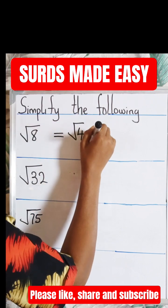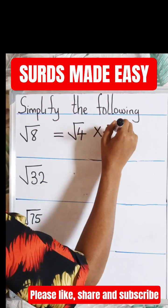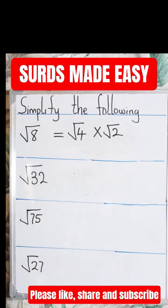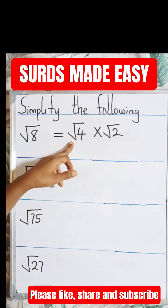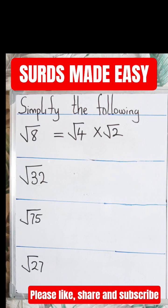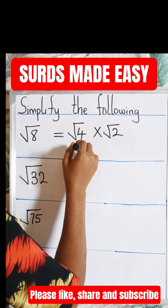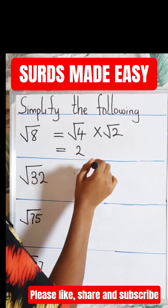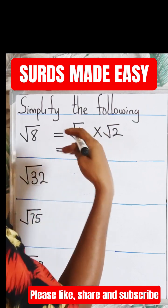So let's do this together. Root 8 is equal to the square root of 4 times the square root of 2. So root 4 times root 2 equals root 8. Now root 4 is 2, times root 2 remains root 2.